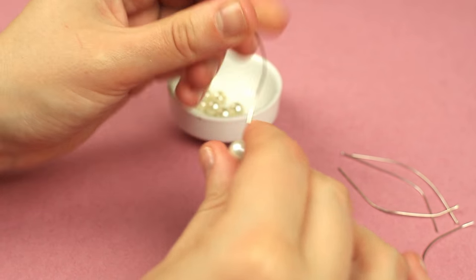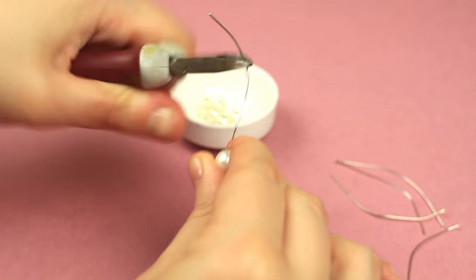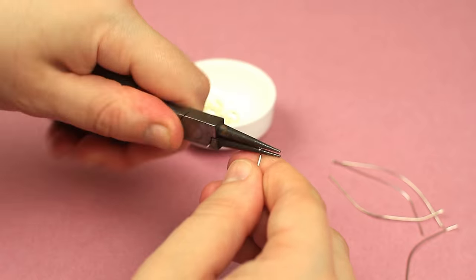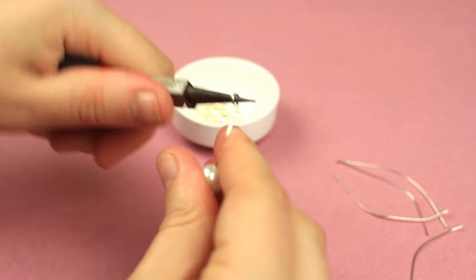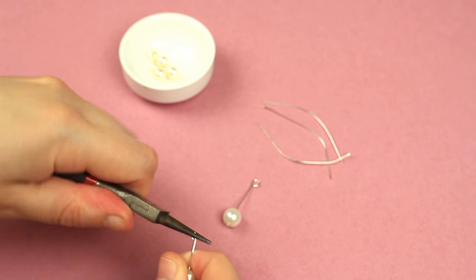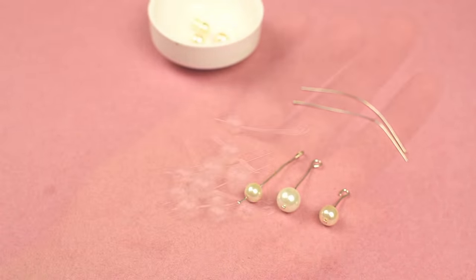Thread a bead on a pin. Cut off the excess pin beyond an inch or so from the pearl. Use cutting pliers. Make a loop at the end. Use round nose pliers. Prepare several similar details, varying the pin length each time. Thus, we'll get different sized elements.